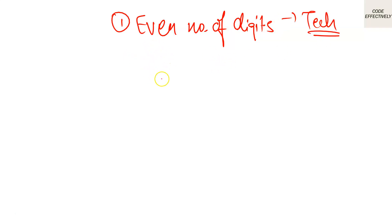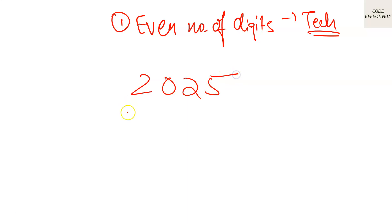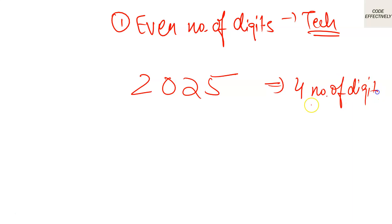For example, let's say our tech number is 2025. In 2025, we can see there are four digits. Four is an even number, so our first condition is satisfied and is true.